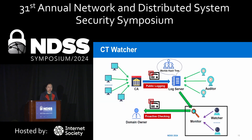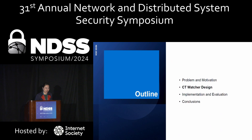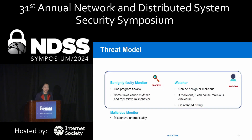In our work, we look at the trustworthiness of monitors and propose a fourth component to the CT framework called the CT Watcher. We want the watcher to work together and provide an inspection service to ensure the reliability of the CT monitor. Our trust model assumes monitors can be faulty or malicious. We deploy multiple watchers, which can also be benign, faulty, or malicious. For the watchers, we adopt a distributed deployment with a majority-honest assumption — so if at least one watcher is working correctly, we can still have good inspection of the monitor's service.